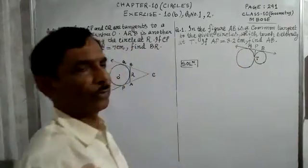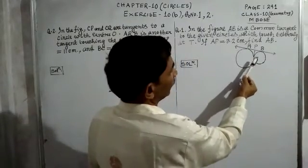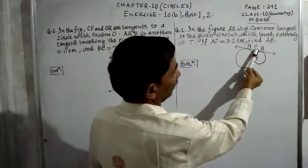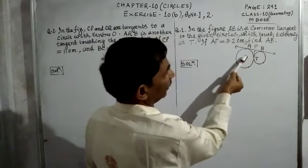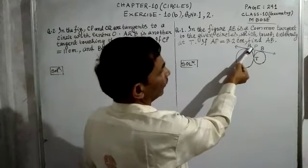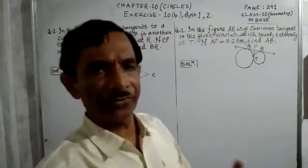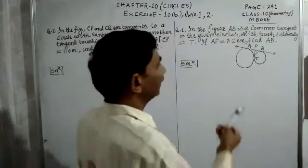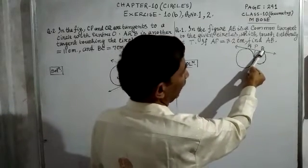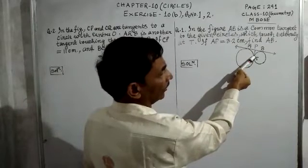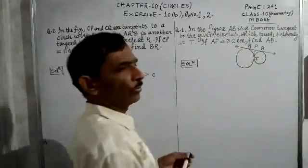We can explain the figure like this: from point P, AP is a tangent and TP is a tangent to the larger circle, so these two tangents are equal because tangents from an external point to a circle are equal. Similarly, in the smaller circle, PB is one tangent and PT is another tangent, so these two tangents are also equal.